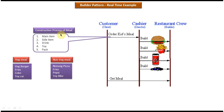The construction process of the meal is the same — only the items will be different. Say the customer orders a kids meal — specifically a veg meal. The cashier will take the order and tell the restaurant crew. The restaurant crew will check what kind of meal the customer has ordered. If it is a veg meal, he will pack it with a veg burger, fries, Coke, and a toy car. If it is a non-veg meal, he will pack it with a non-veg pizza, fries, Pepsi, and a toy bike. Finally, the restaurant crew will create the veg meal or non-veg meal based on the order the customer placed, and give that meal back to the customer.